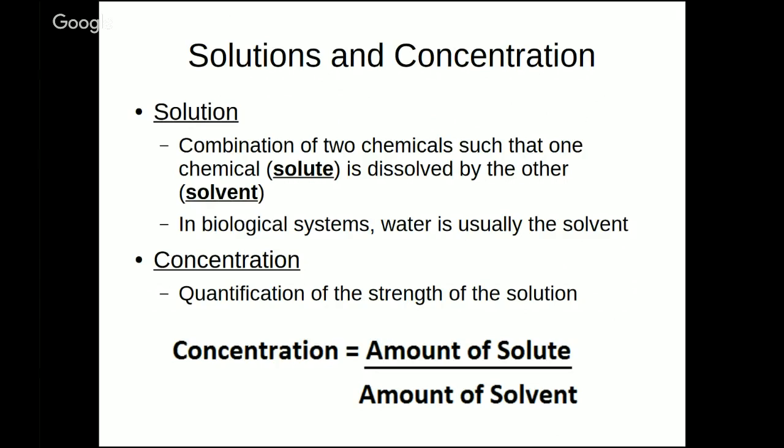First, let's define what a solution is and what concentration is. A solution is a combination of two chemicals, such that one chemical, which we call the solute, is dissolved by the other chemical, which we call the solvent. You make solutions at home all the time. If you make coffee or tea or Gatorade, that's a solution. The Gatorade powder is the solute, and the solvent is water, because the water dissolves the Gatorade.